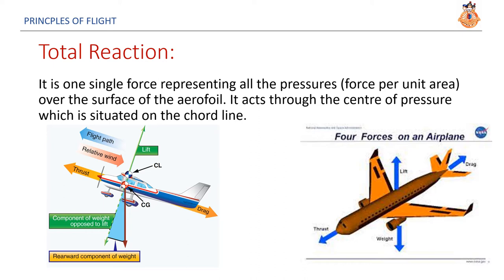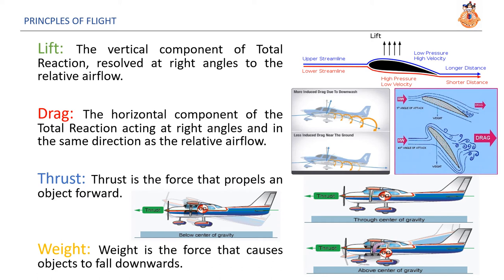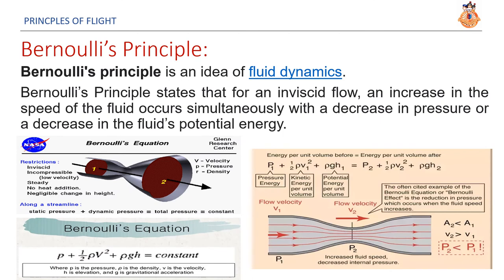Total reaction. It is one single force representing all the pressures, force per unit area over the surface of the aerofoil. It acts through the center of pressure which is situated on the cord line of the aircraft. Lift. The vertical component of the total reaction resolved at right angles to the relative airflow. Drag. The horizontal component of the total reaction acting at right angles and in the same direction as the relative airflow. Thrust. Thrust is the force that propels an object forward. Weight. Weight is the force that causes objects to fall downwards. These are the four forces that comprise the total reaction of an aircraft. And with that, we have ended the glossary of terms.